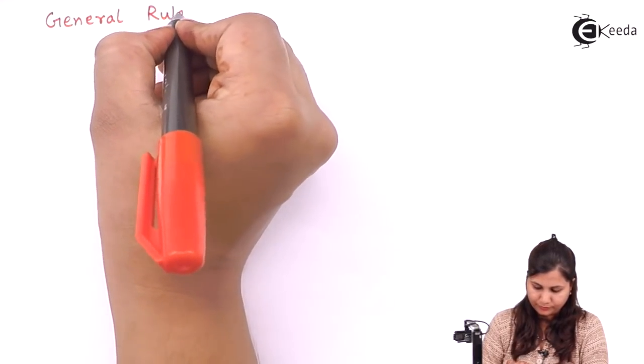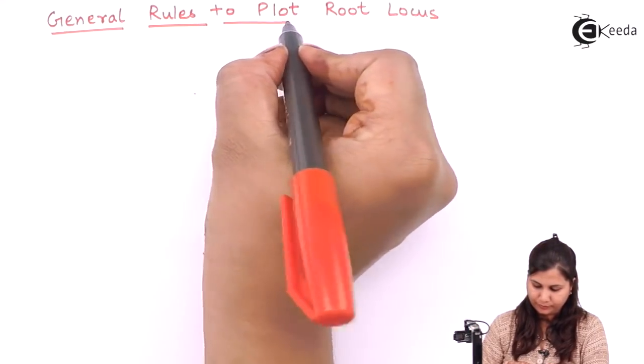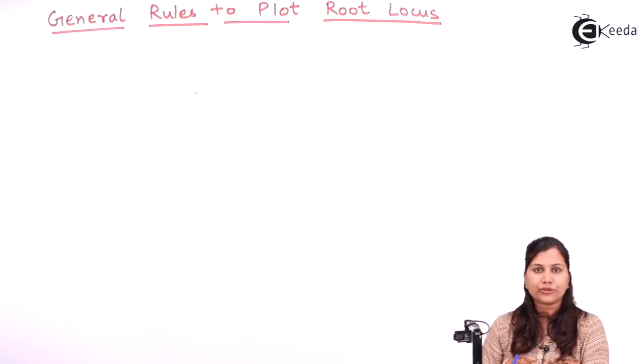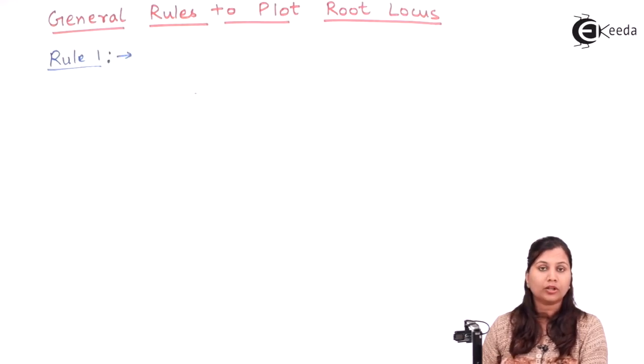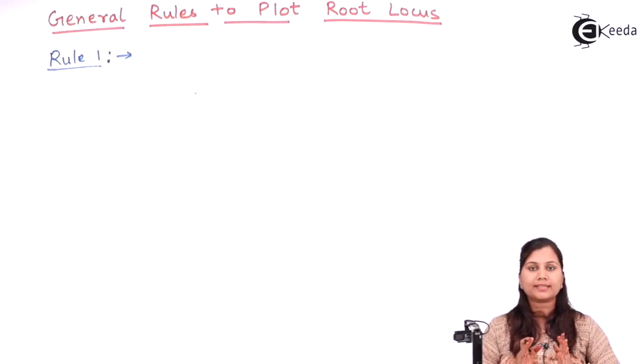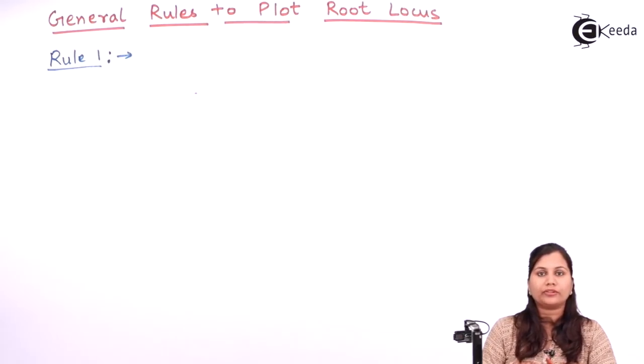Hello friends, in this video we are going to study the general rules used to plot the root locus of a system. Let's start with the first rule. Rule number one, the first step whenever we are plotting the root locus of a system is to first determine the open loop poles and zeros of the system.